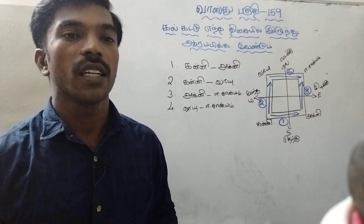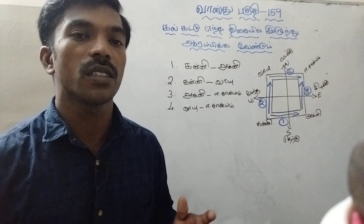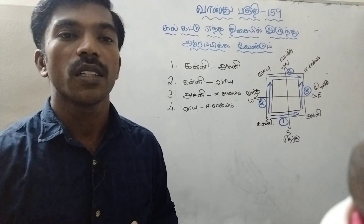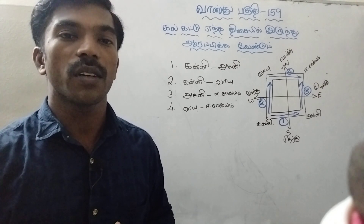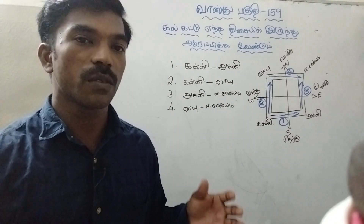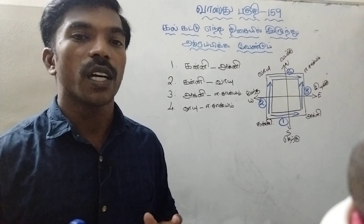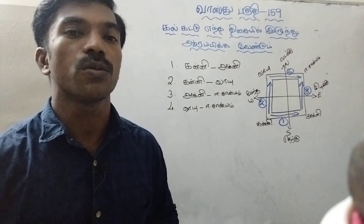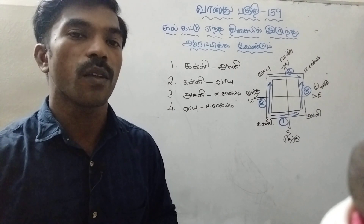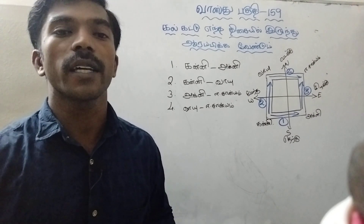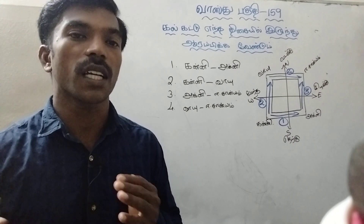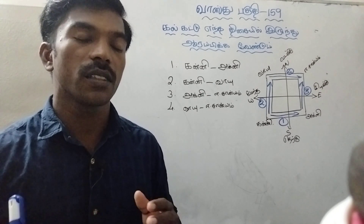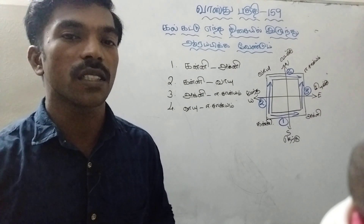For example, the cement will dilute. Okay, so the cement will dilute. Then if the cement will dilute, then the cement will dilute. Therefore, if you use the metal machine, you can use the metal machine.